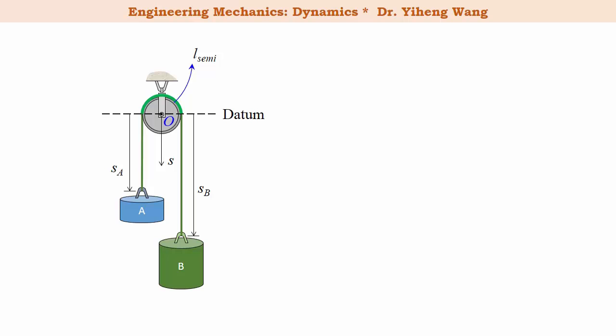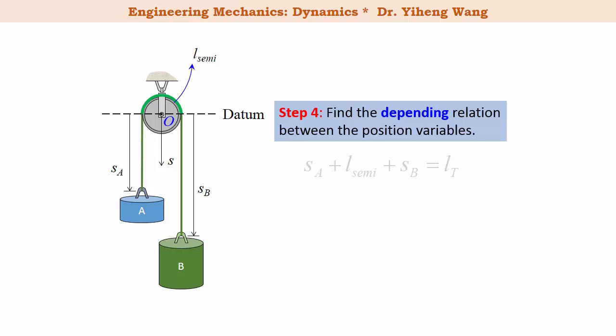Step 4. Notice that I put a different background color for this step, since in my opinion this is the most important step and also the easiest for students to make mistakes. Here we need to find out how the positions of the two particles, in this case SA and SB, are related. For this example it's quite simple. The total length of the rope is a constant, and therefore that equals to SA plus L-semi that we talked about earlier, plus SB, and that equals to the constant length LT.